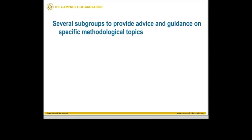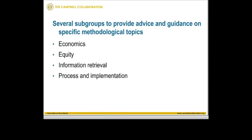We have several subgroups that provide advice and guidance on specific methodological topics. These subgroups include one on economics, one on equity — specifically equity methods to encourage review authors to discuss the impact of interventions on reducing inequality of opportunity — one on information retrieval, one called Process Implementation, one on statistical methods, and one that provides training in statistical methods for meta-analysis and other aspects of systematic review.